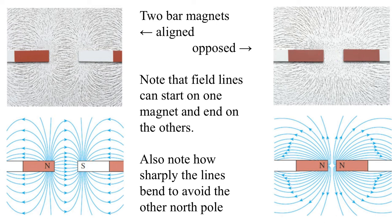If they're opposed, like north versus north, we can see that the fields push on each other, and we can almost see the pressure here between them because they want to zero out here. Now the field lines can start on one magnet and end on the other. And here, notice how sharply the magnetic field lines bend to avoid the northern pole.